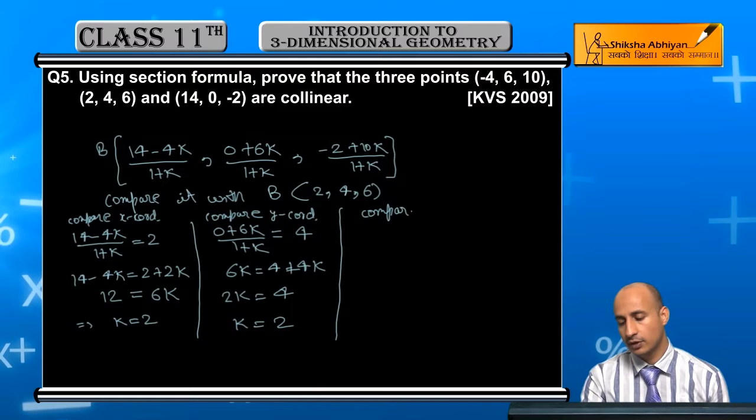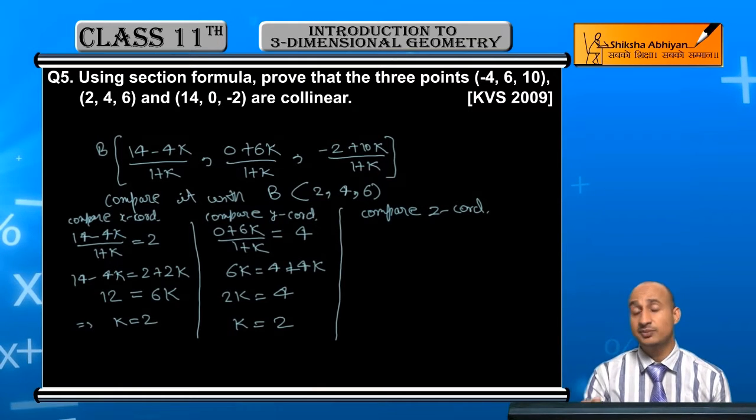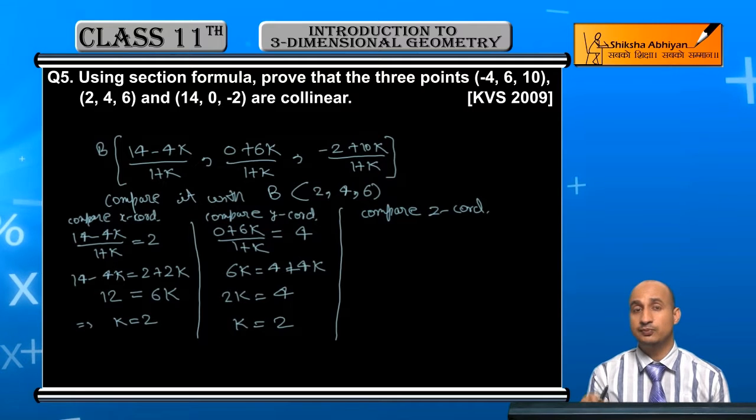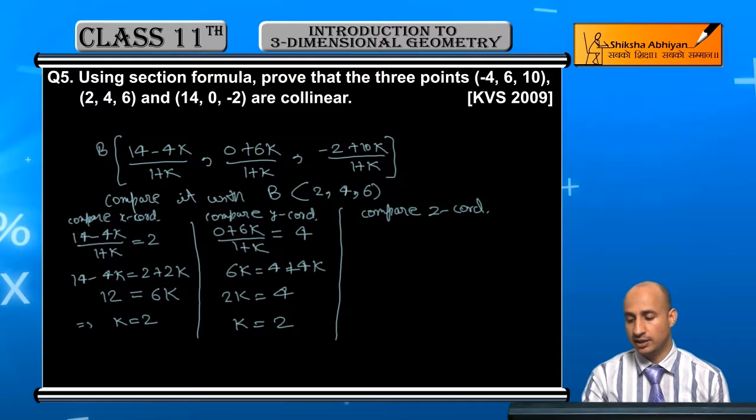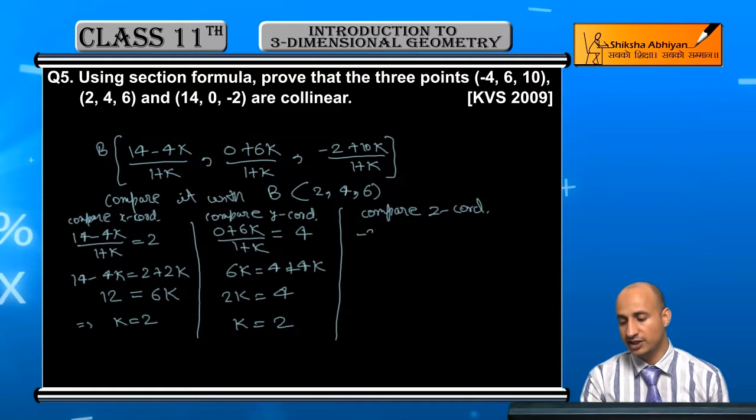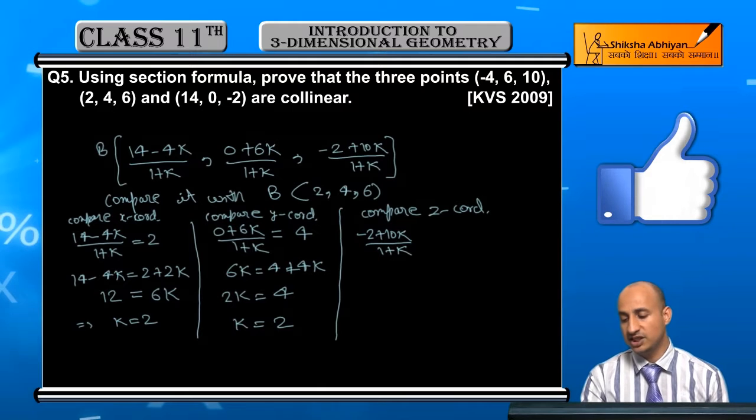Now compare z coordinate. Now if you compare z coordinate, here also k's value came the same. So that means B lies on A and C. Let's see here.